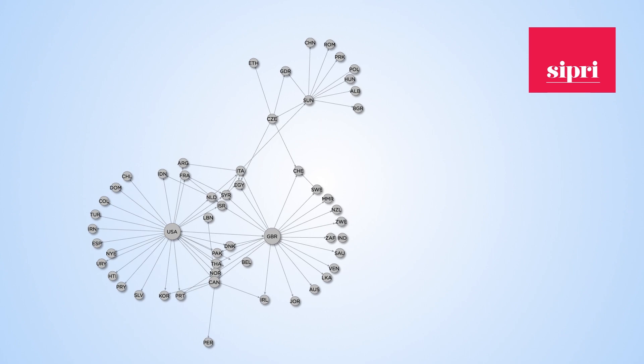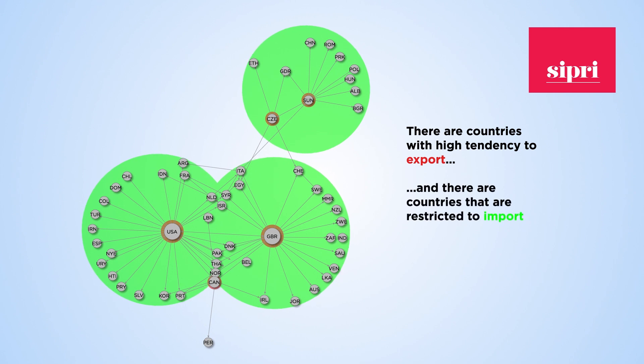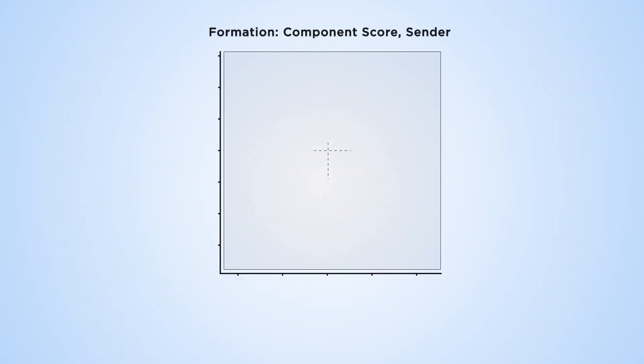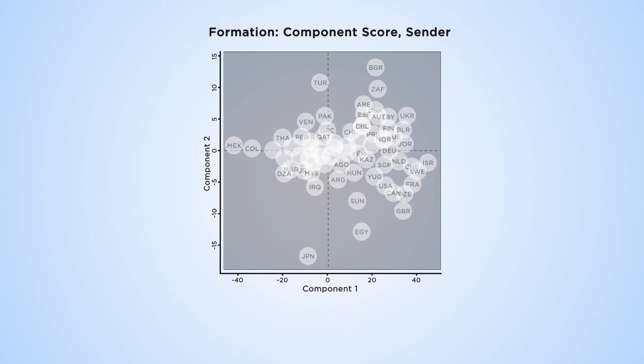Data collected by the Stockholm International Peace Research Institute provides a useful illustration of the variation between countries. We can use a type of analysis called principal component analyses to look at this further. Each country is given a value for a particular component, and this component is given a definition.